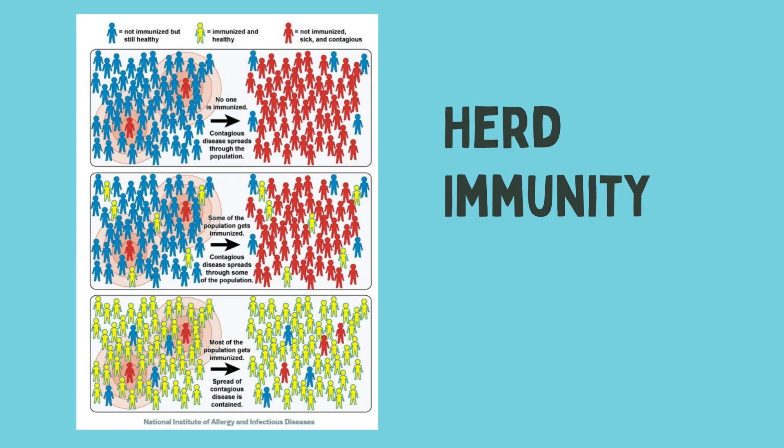Here you'll see a picture about herd immunity from the National Institute of Allergy and Infectious Diseases. The top picture shows people not immunized but still healthy, with two not-immunized sick and contagious people — contagious disease spreads through the population. In the middle picture, some of the population gets immunized and disease spreads through some of the population. In the last picture, most of the population gets immunized, the spread of contagious disease is contained, and it also protects those who cannot be immunized.